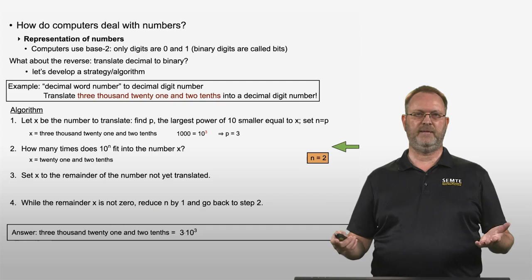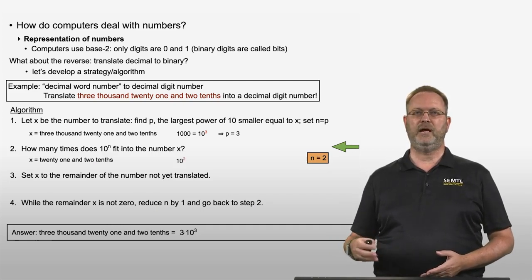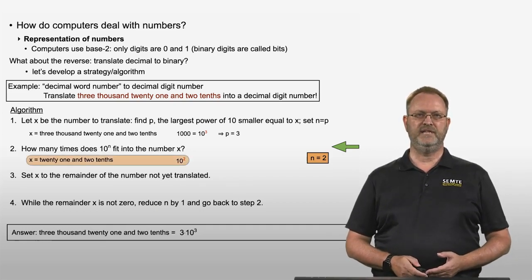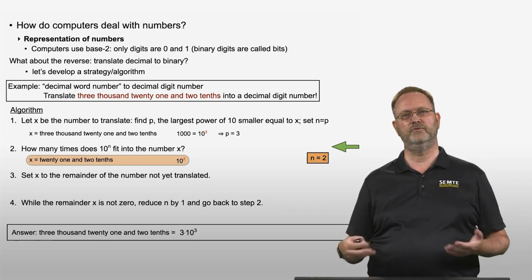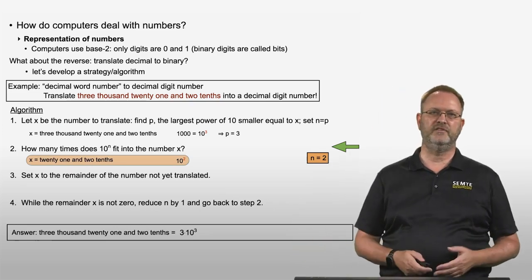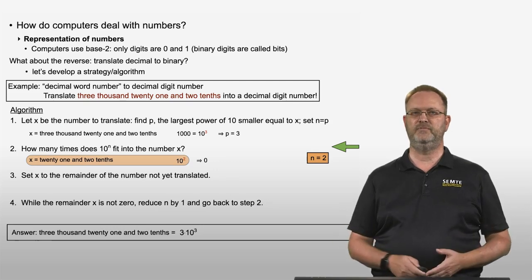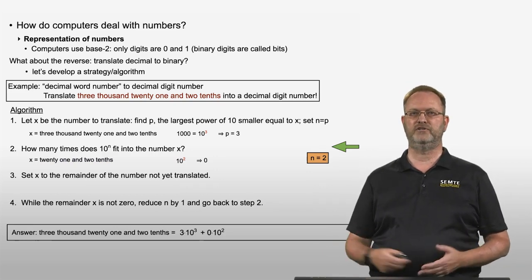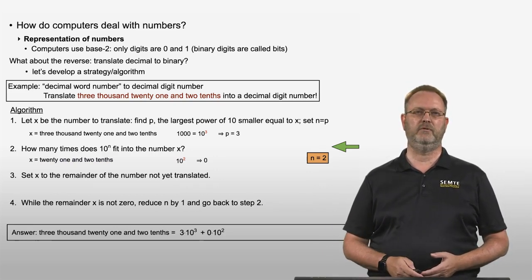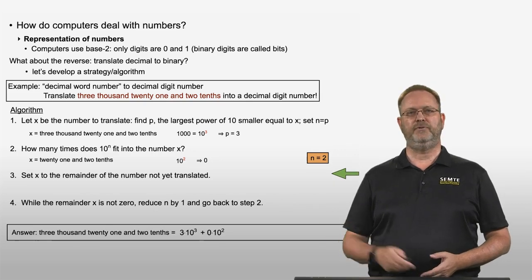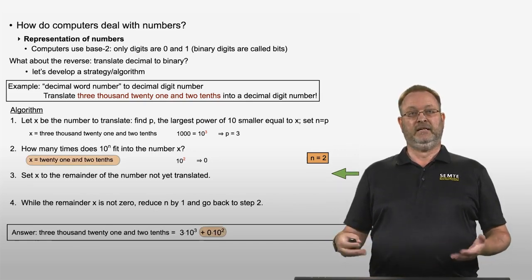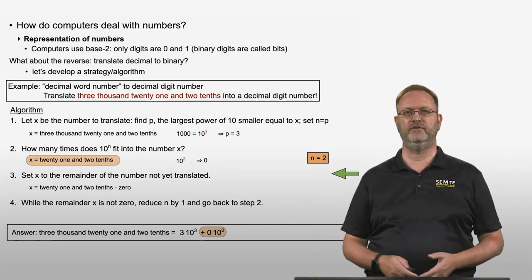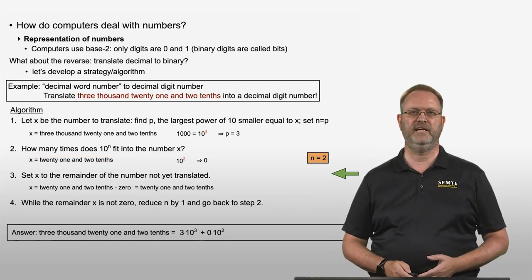Back at step 2 with n equal to 2: how many times does 10 to the power 2 fit into 21 and 2 tenths? 10 to the power 2 is 100, and 100 is larger than 21 and 2 tenths, so it fits 0 times. We write plus 0 times 10 to the power 2. Step 3: we set x to the remainder — 21 and 2 tenths minus 0 times 100 — which leaves us again with 21 and 2 tenths.